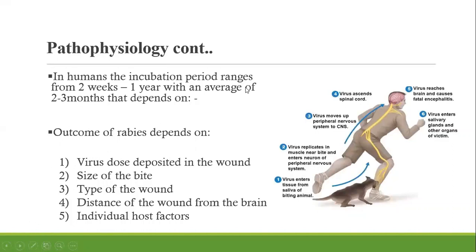In terms of the incubation period, it has a wide range — scientists put it at between two weeks and one year, but typically it takes a couple of months before symptoms appear. This depends on certain factors, which explains the huge variability: the dosage or viral load of the animal that bit you, the size of the wound, and the distance of the wound from the brain. A bite near the clavicle area is much closer to the brain than a bite at the lower limb, so progression can be faster.